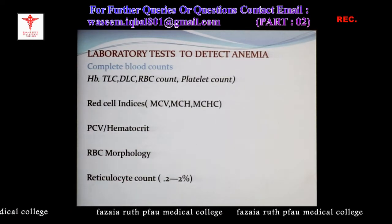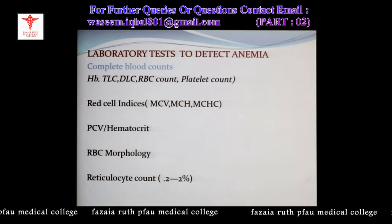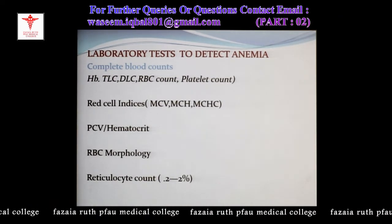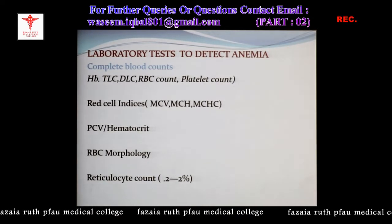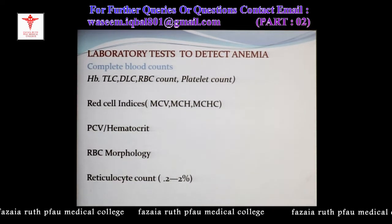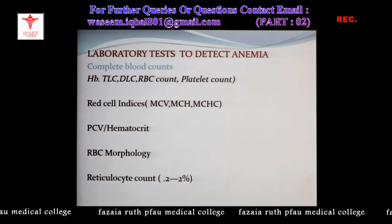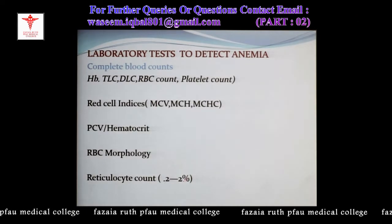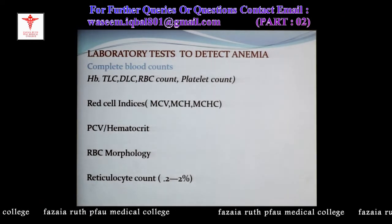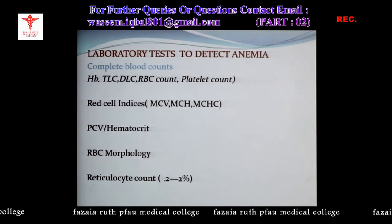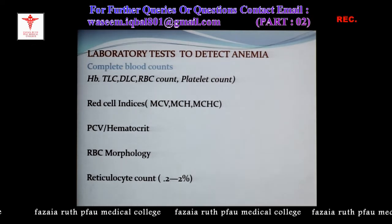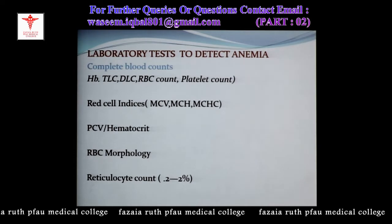Reticulocyte count: reticulocytes are young RBCs normally present in peripheral blood for one to two days before maturing. They are larger in size and then become normal-sized mature RBCs, roughly the size of a small lymphocyte. Normal value in adults is 0.2–2% and in newborns 4% or more. Reticulocytes are increased in excessive hemolysis as immature RBCs are showered into peripheral blood, and decreased in bone marrow failure such as aplastic anemia, myelodysplastic syndrome, or megaloblastic anemia.